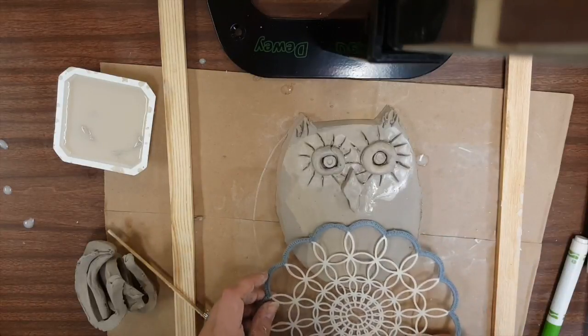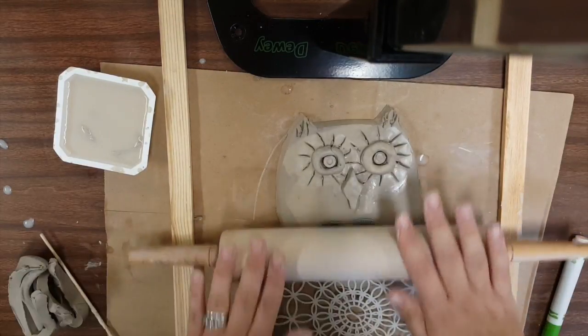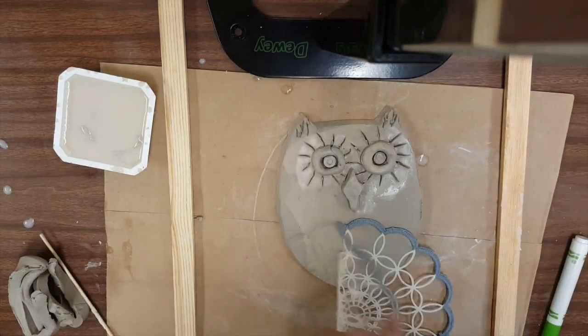Now for the stomach you want to add some sort of texture. So look in your bin at your table and find something you want to add. I'm going to roll on this doily texture.